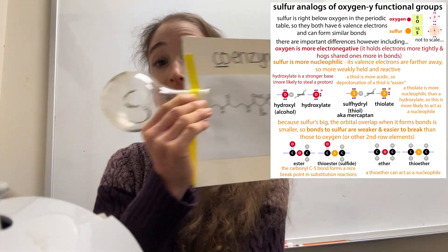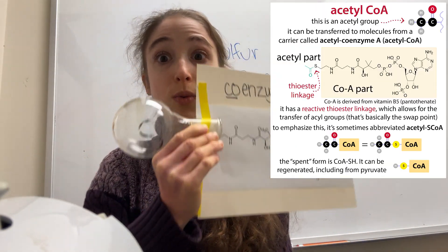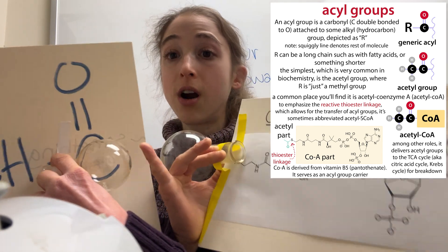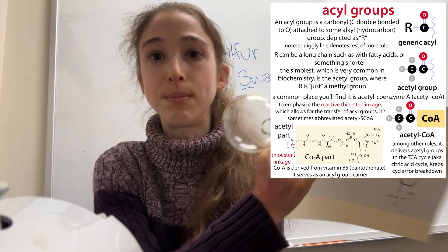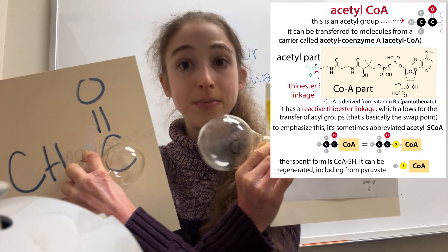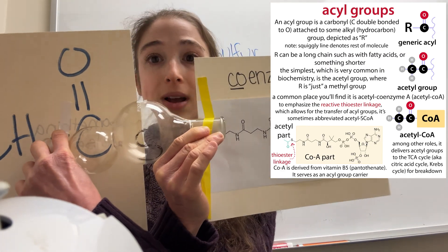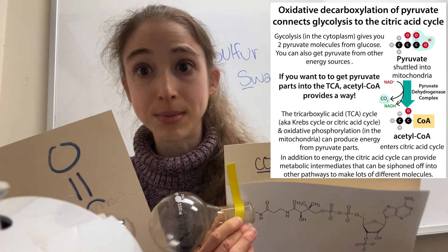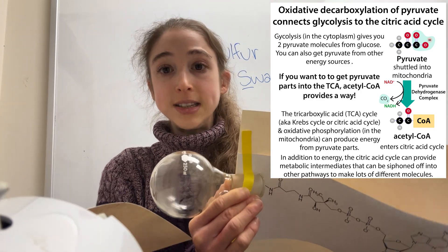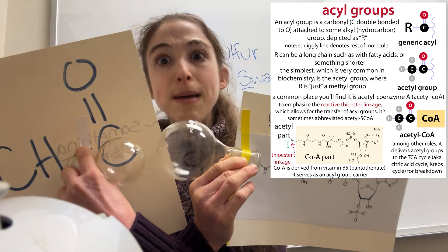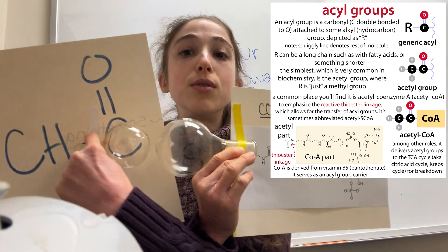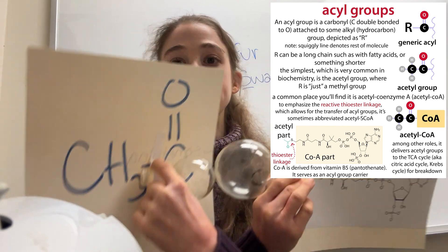In biochemistry, we use coenzyme A a lot in order to swap things from one place to another. Often what we're swapping is an acyl group — where you have a carbonyl carbon attached to some hydrocarbon attached to something else. This would be an acetyl group, but we could have a fatty acyl chain on here. We can attach it to the sulfur of coenzyme A, and now we have a way to transfer this group onto something else — like oxaloacetate to make citrate. Or in fat building, we can swap it onto another acetyl-CoA or malonyl-CoA. Basically, you can move these pieces from one sulfur onto something else.